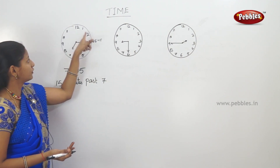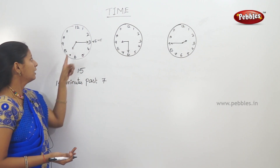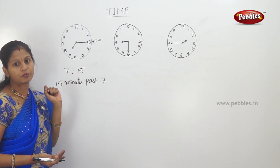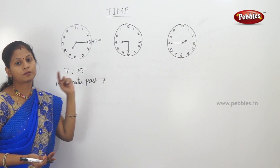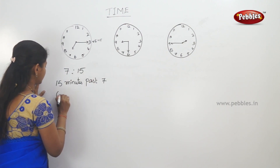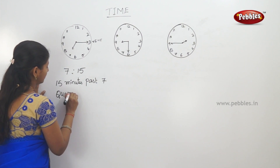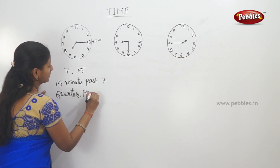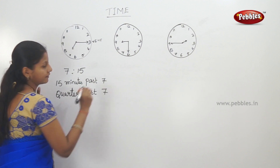That means 'past' is complete. After that, 15 minutes is complete. Now, minute hand is 3 — quarter. That means 15 is equal to a quarter. Quarter past 7. Quarter past 7.